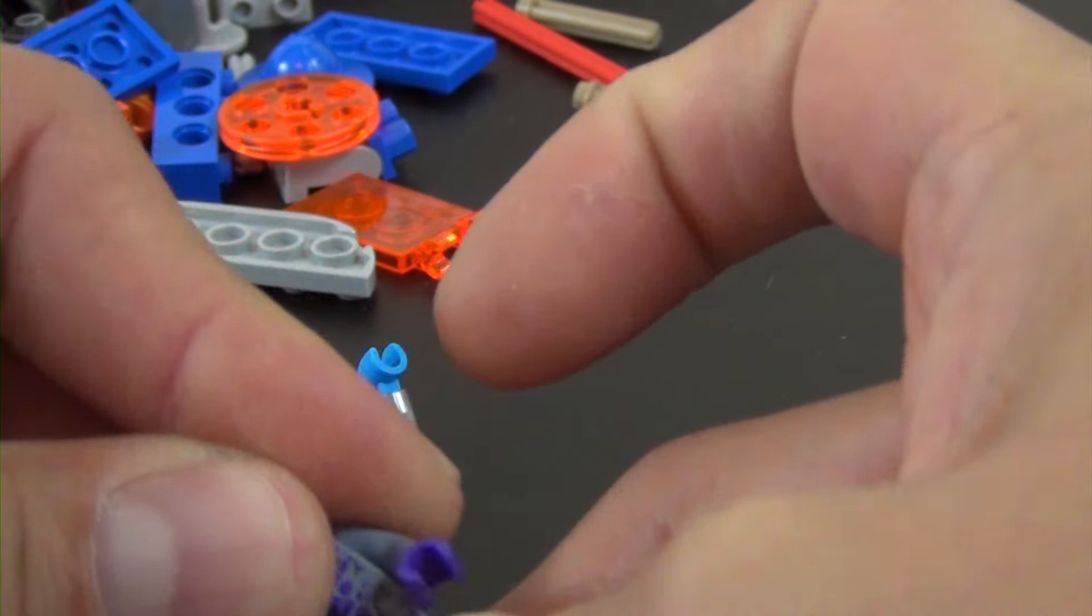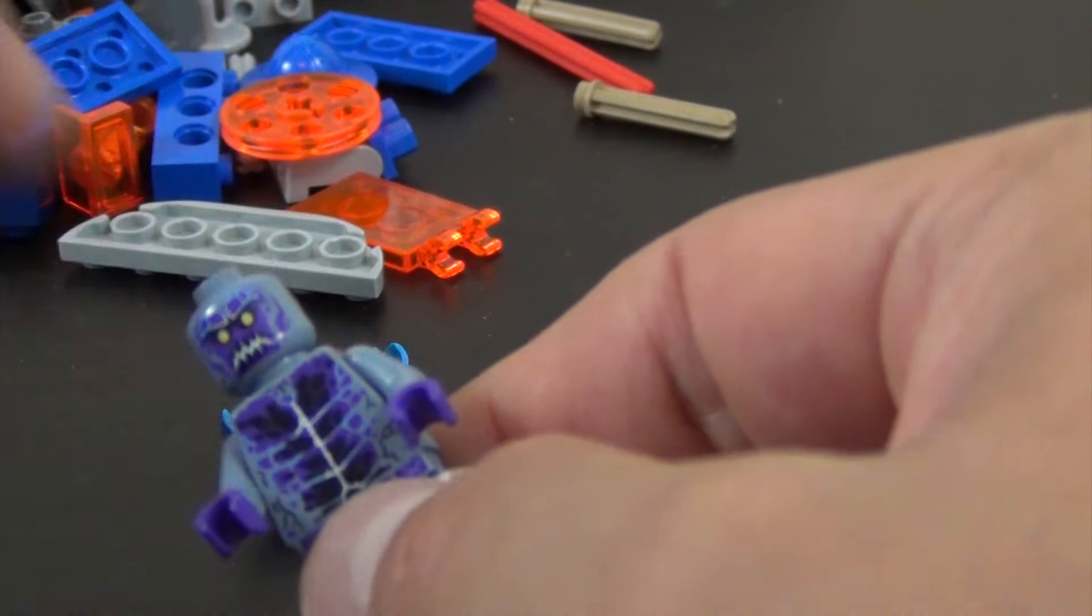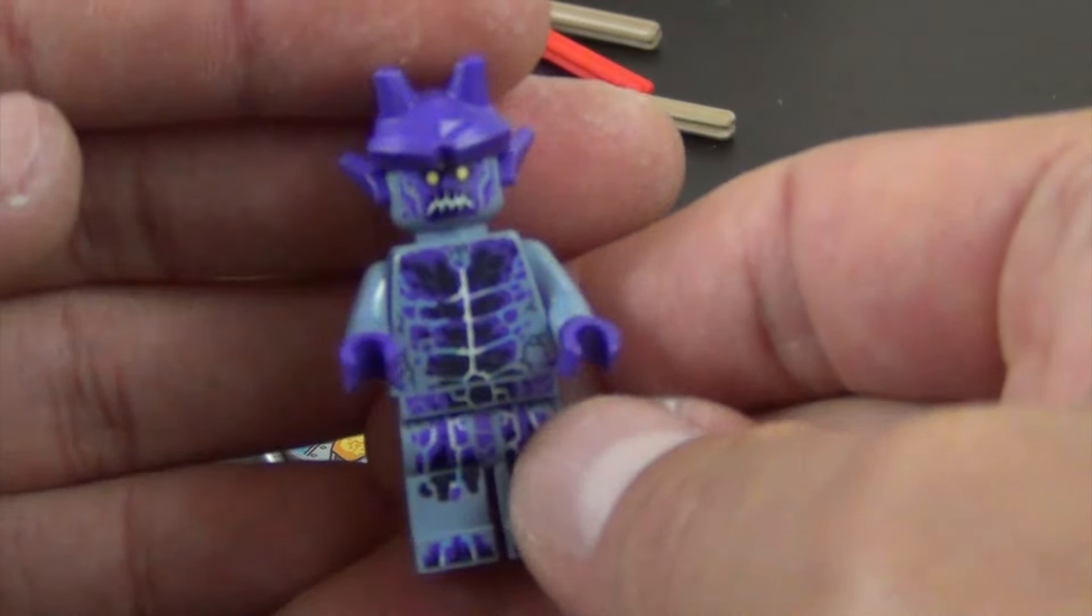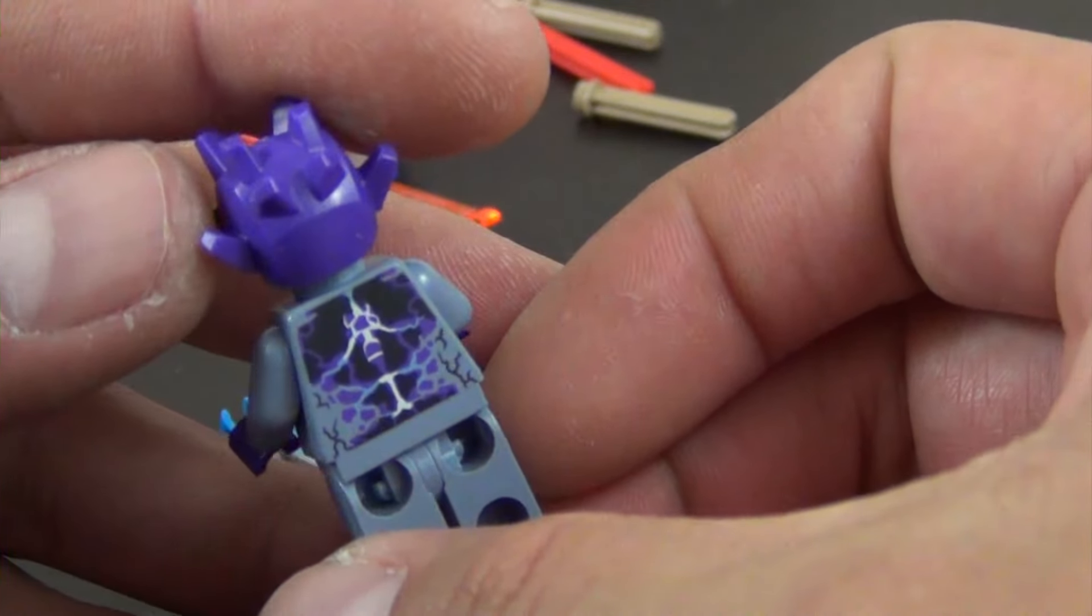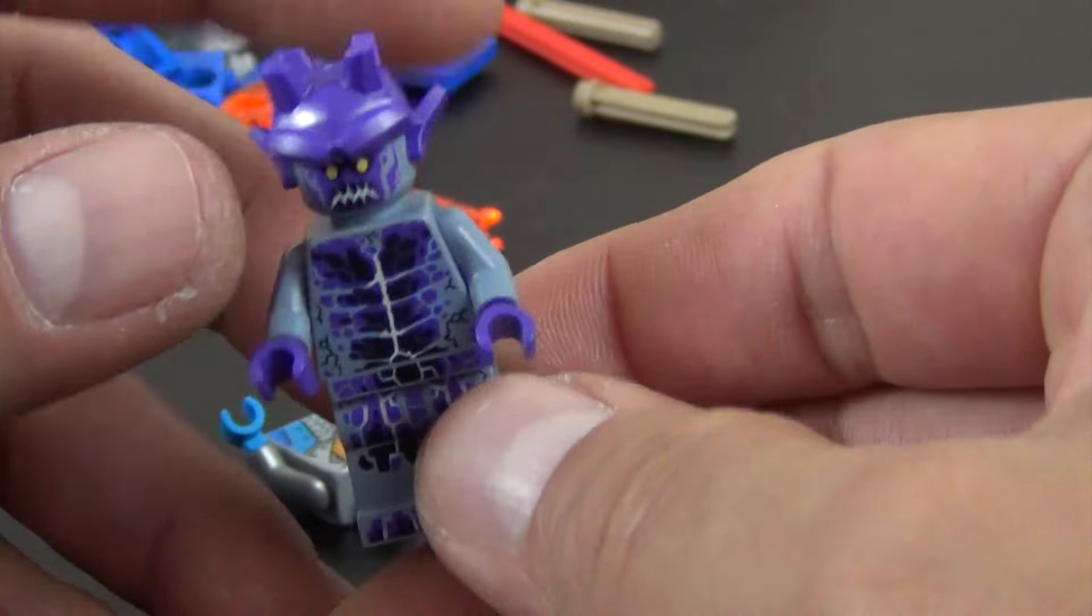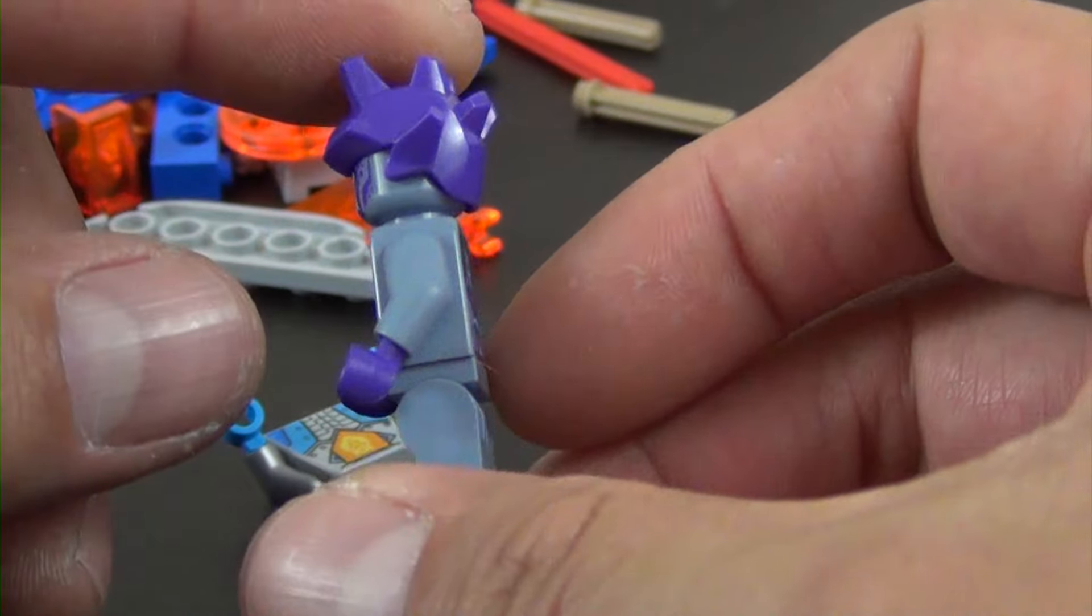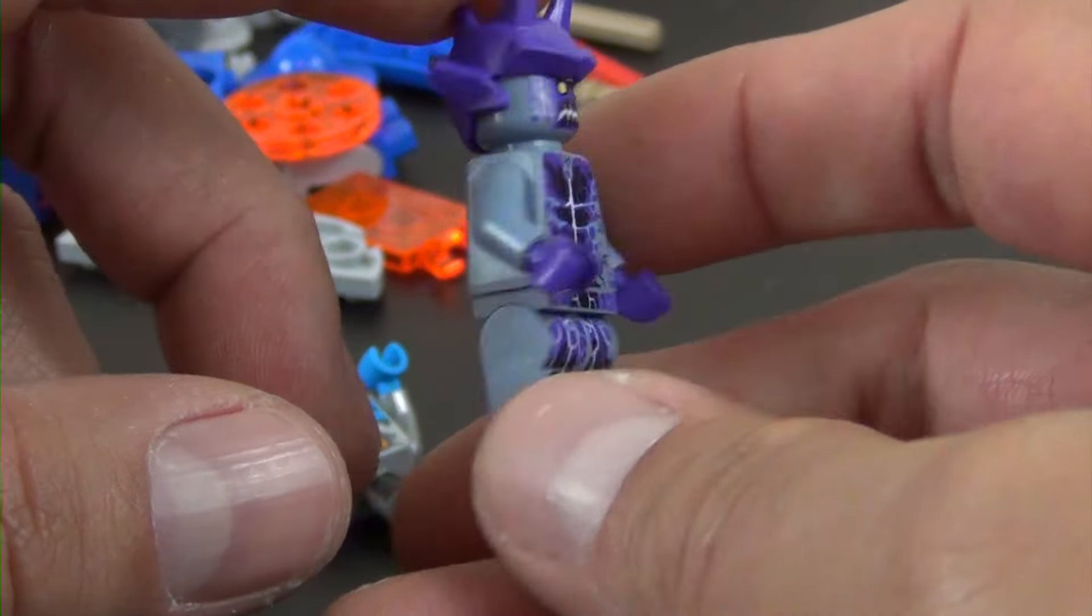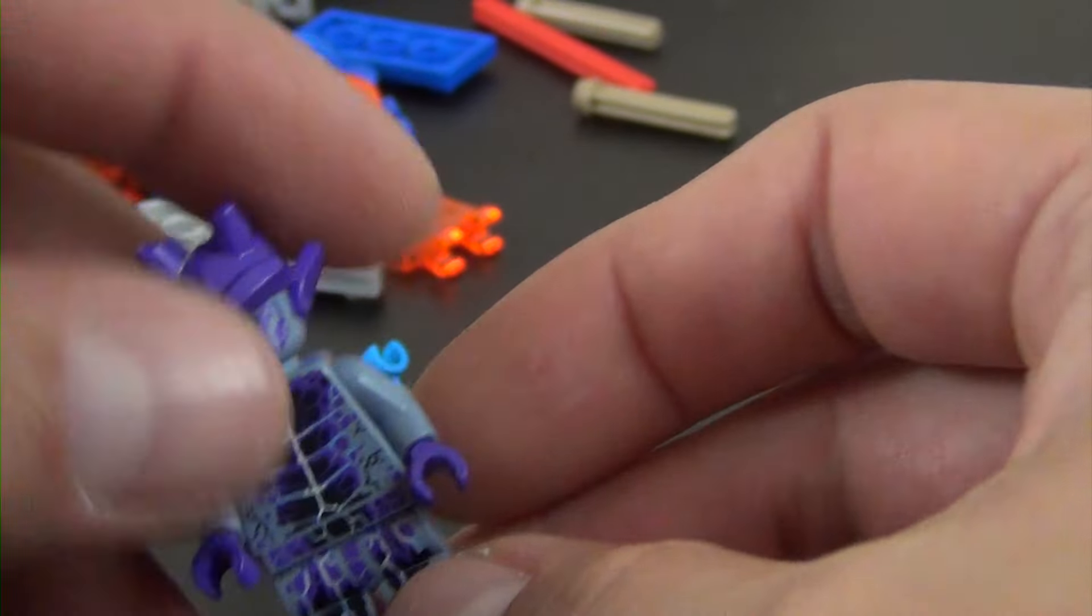All right, we're going to build our minifigures first. This is one of the rock villains. I'm not sure what they're actually called in this season of the Nexo Knights, but you can see he's got all the lightning decoration and then all of the rock, the rock head and other rock style stuff. That's our first minifigure, it's one of the villains.